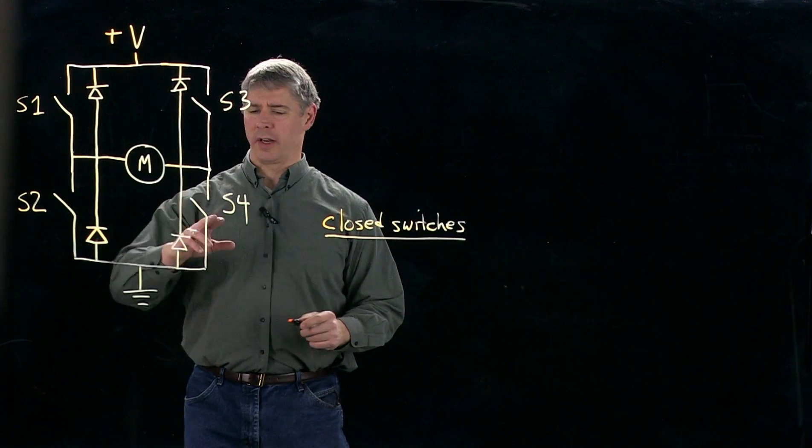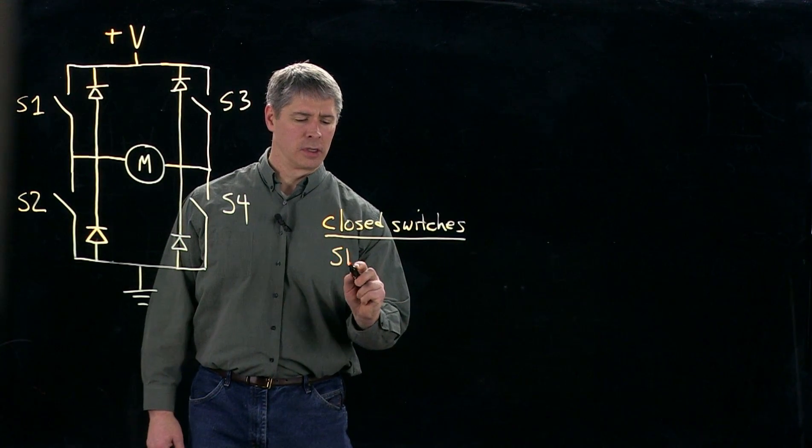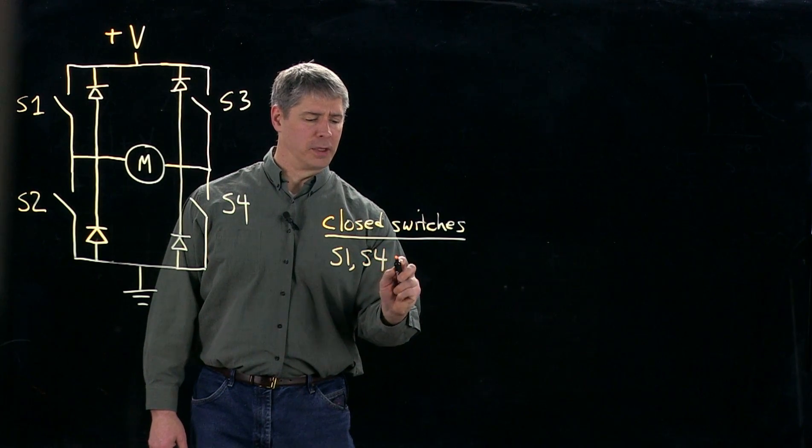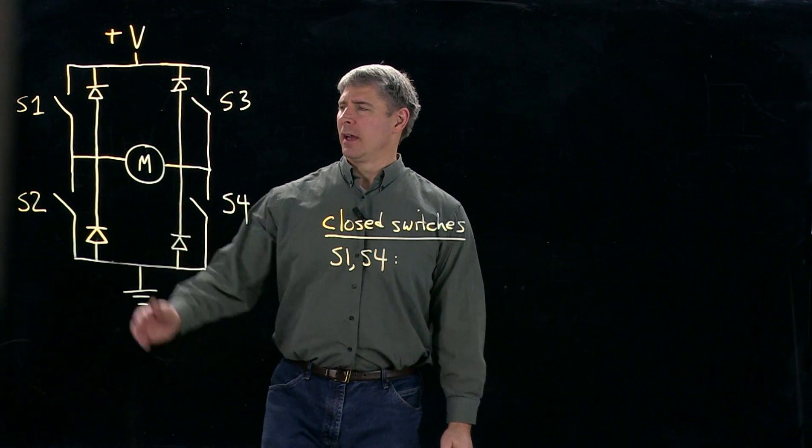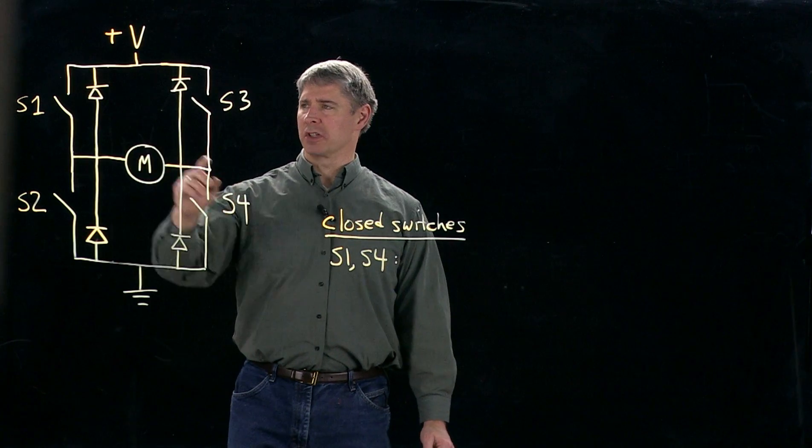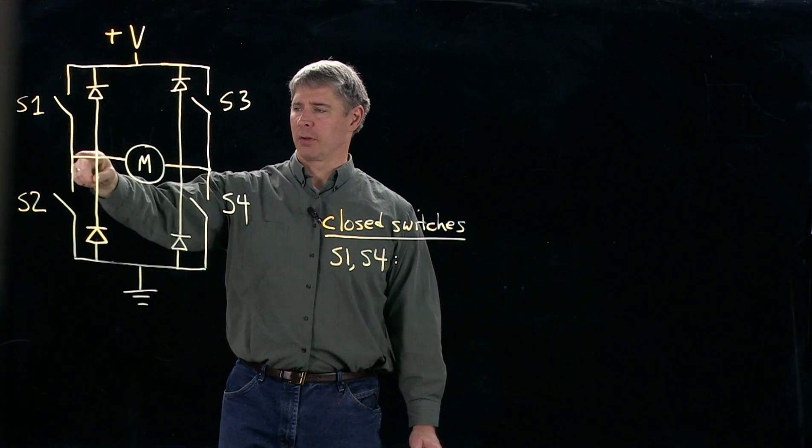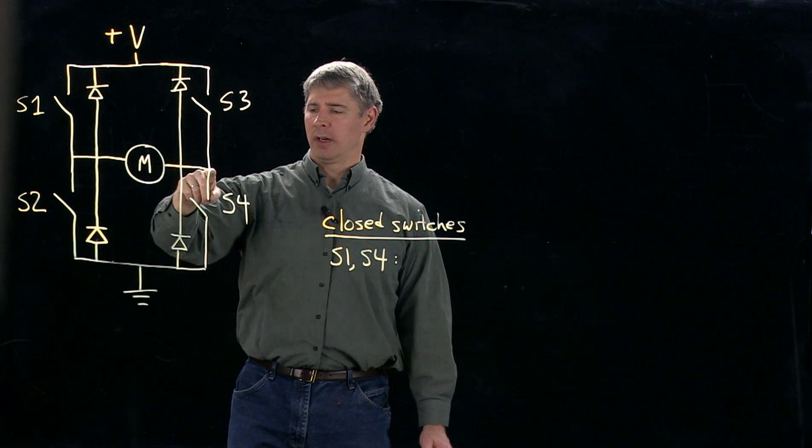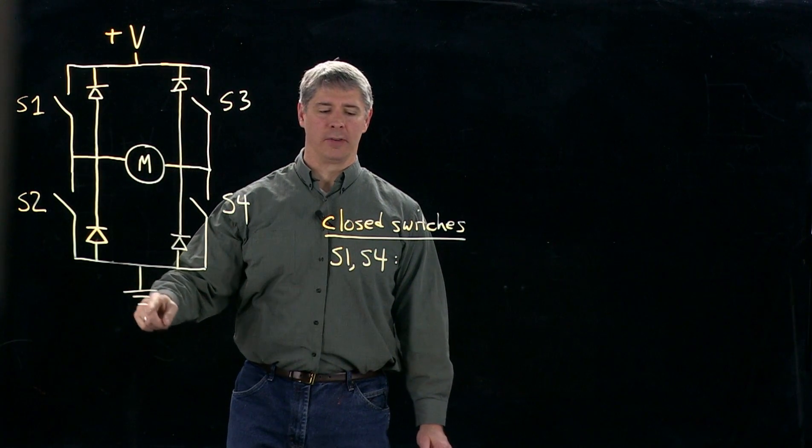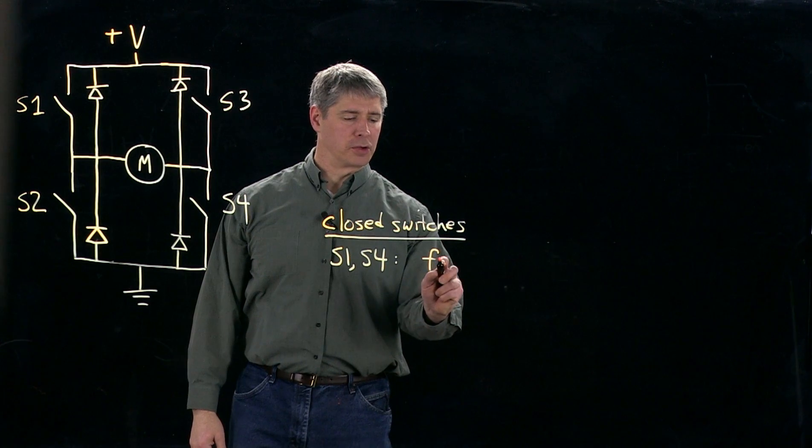Let's say that S1 and S4 are closed and all the others are open. In that case, current will flow from the positive voltage supply down through the switch, through the motor, down through the other switch and to ground, and I'm going to call that forward motion of the motor.